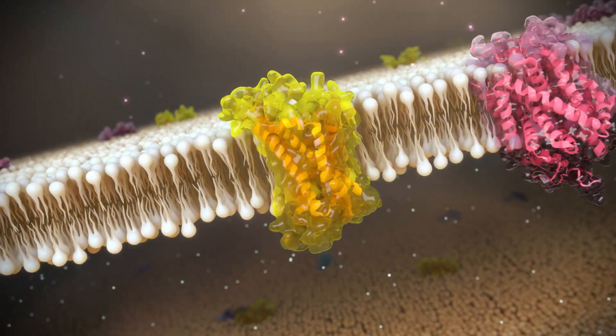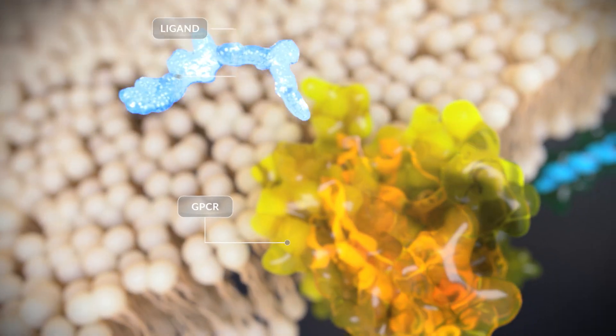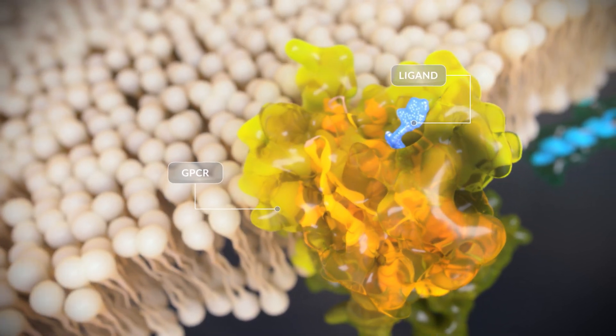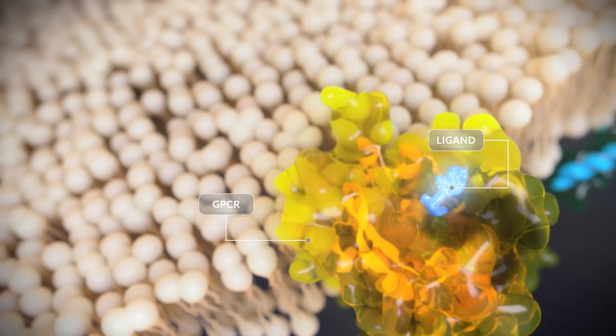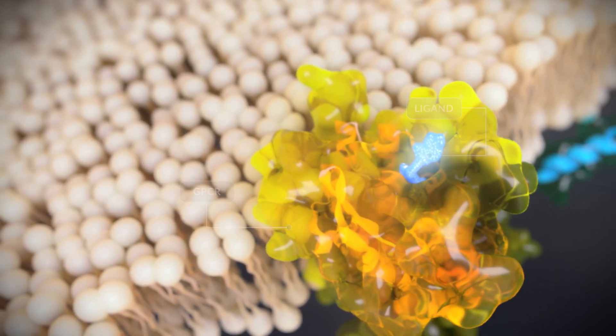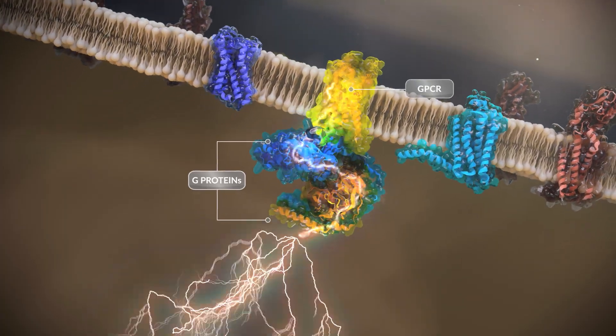GPCRs are present on all cells in the body. They pass signals from a variety of extracellular messengers to modulate intracellular pathways via the activation of G-proteins and other signaling molecules.